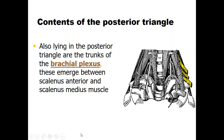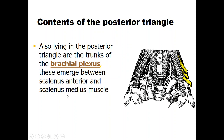Deep between the scalenus anterior and scalenus medius muscles, we find the roots of the brachial plexus. This plexus originates from cervical segments C5, C6, C7, C8, and thoracic segment T1. These roots pass between the scalenus anterior anteriorly and the scalenus medius posteriorly, as if sandwiched between the two muscles.